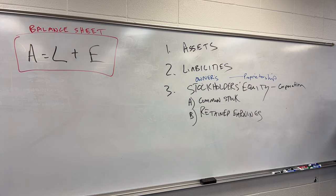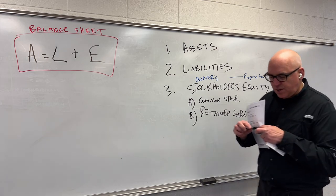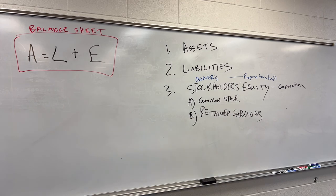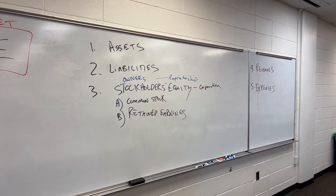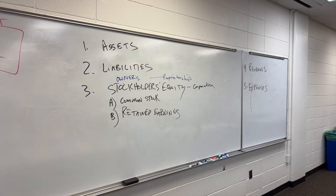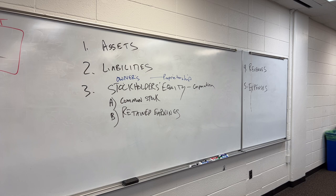Revenues and expenses. Revenues are the amounts received from selling stuff — amounts received from customers. Very simplistically, there are two types of stuff you can sell: products and services. Does Tesla sell product or service?